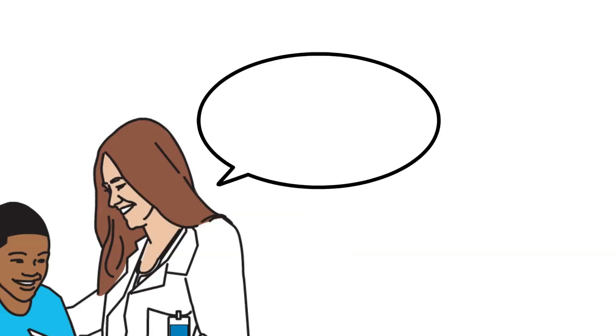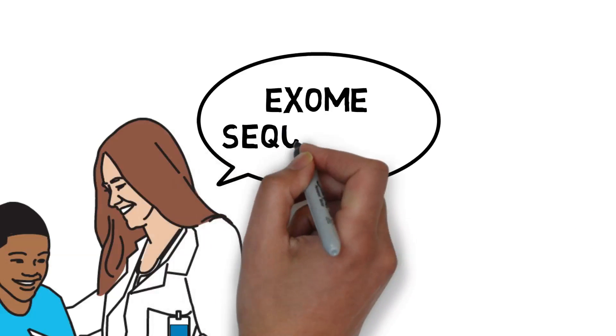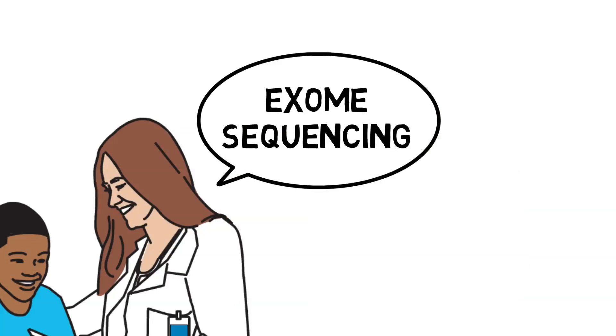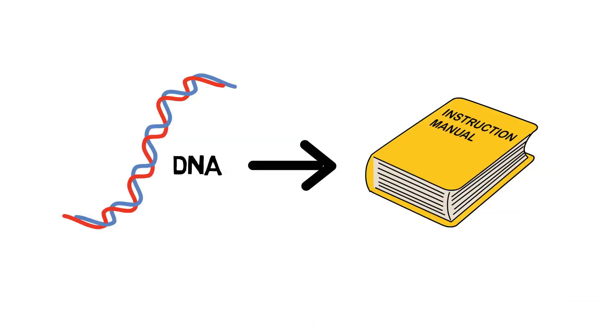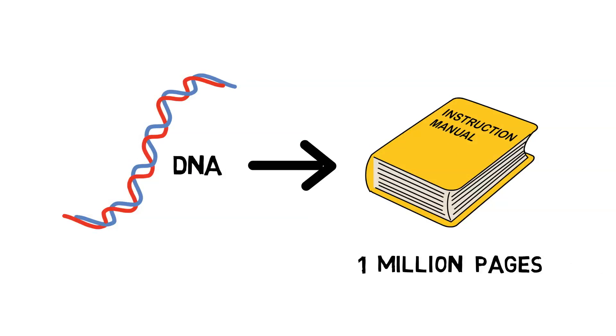The doctor decided he was a good candidate for a new genetic test called exome sequencing. If you imagine our genetic material, or DNA code, as a very large instruction manual, it would fill about one million pages.